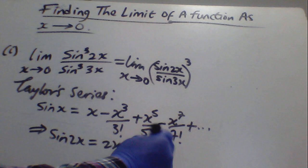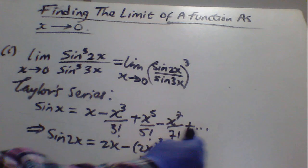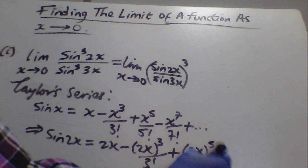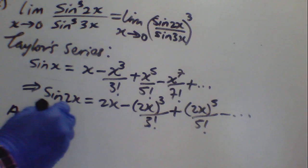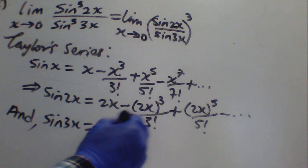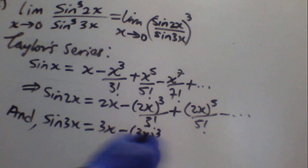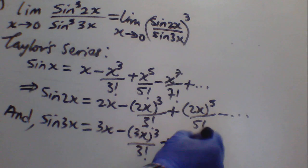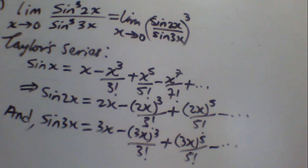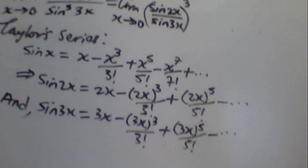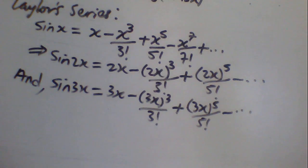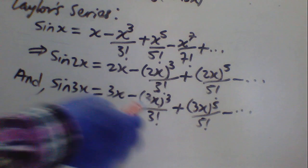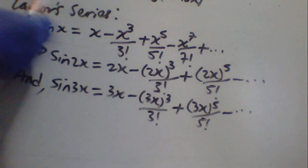So sin(2x) equals 2x minus (2x)³/3! plus (2x)⁵/5! and so on. Similarly, sin(3x) equals 3x minus (3x)³/3! plus (3x)⁵/5! and so on. In this case we can only take the first term of the quotient, because when we substitute x→0, other terms will give us zero.